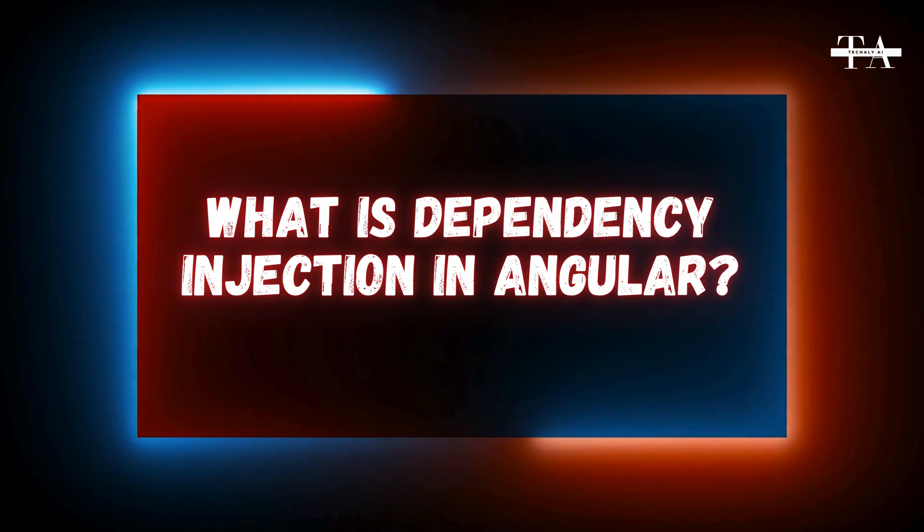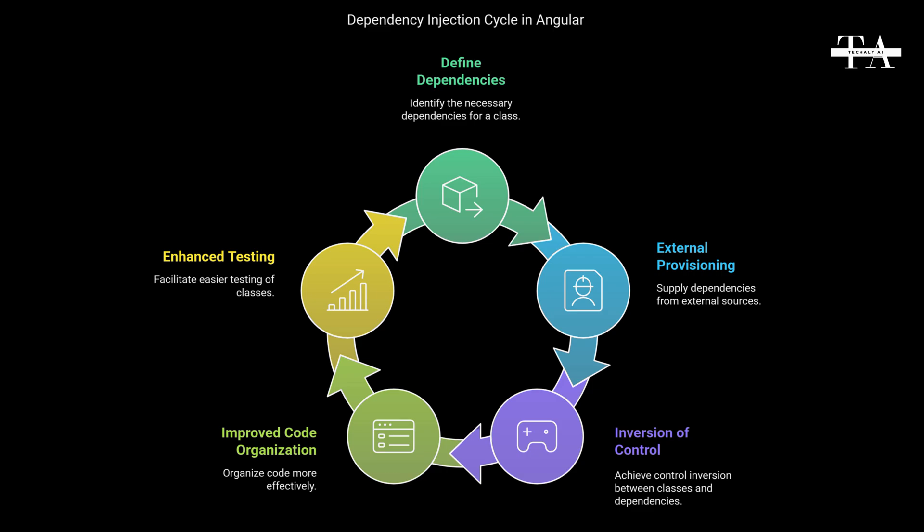What is dependency injection in Angular? Dependency injection (DI) is a design pattern used in Angular to achieve inversion of control (IOC) between classes and their dependencies. It allows a class to receive its dependencies from external sources rather than creating them itself, promoting better code organization and testing.